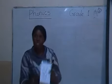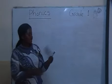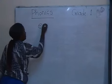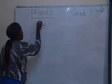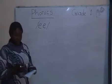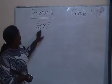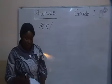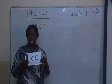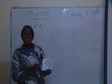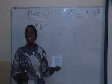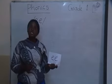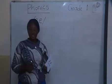Now, what you need to know about this sound is that it's a two-letter sound. The letters are two, but they are just making one sound, which is Ee. The other thing that you need to know is that this sound is found in the middle of the word or at the end of the word.